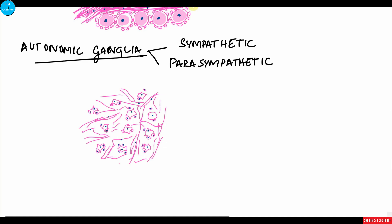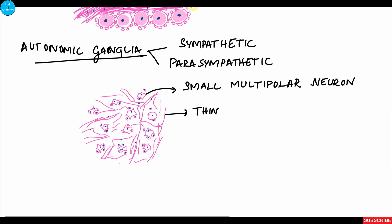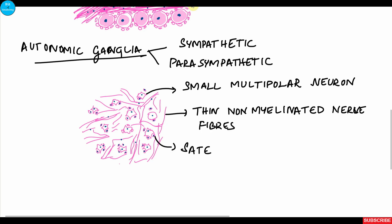To summarize the features of autonomic ganglia: small multipolar neurons, thin unmyelinated nerve fibers, and few satellite cells.